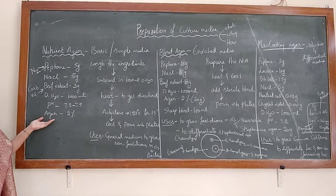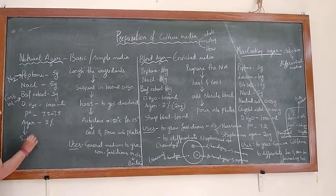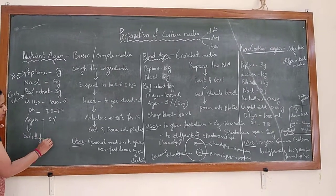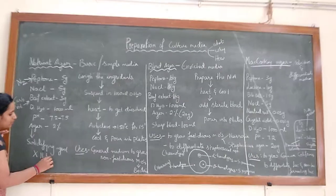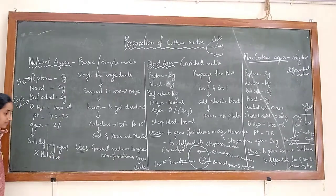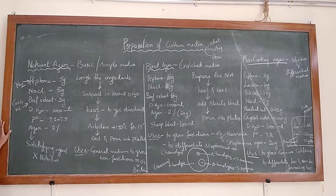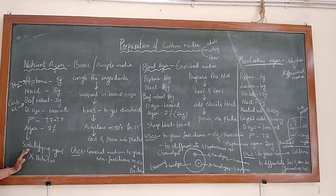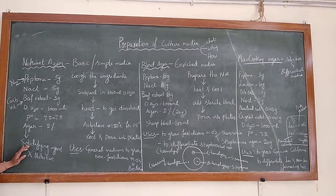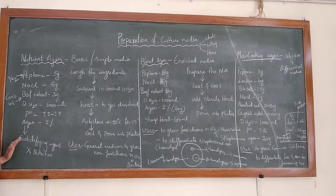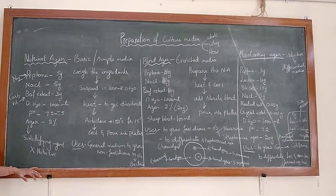Agar agar is used as a solidifying agent. Its unique feature is that it does not have any nutritive value — it does not act as a source of carbon, nitrogen, or anything. It is also not utilized by the microorganism. The agar agar solidifying agent has no nutritive value and is not used by microorganisms.